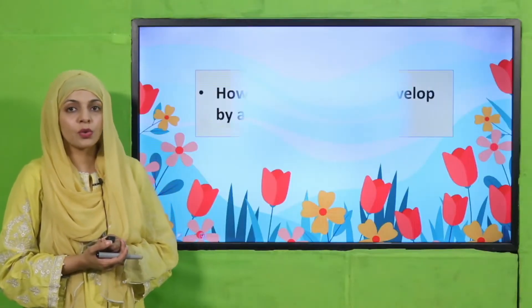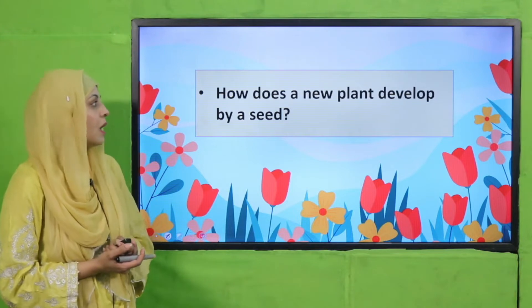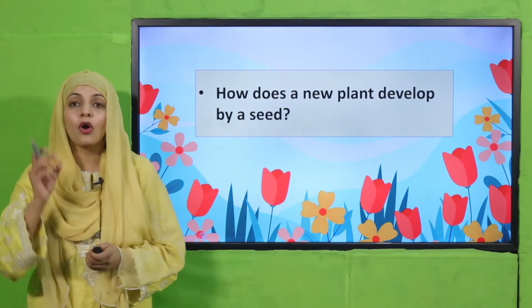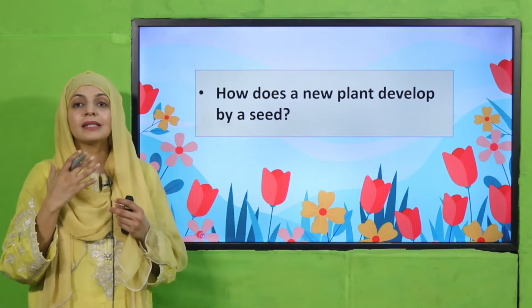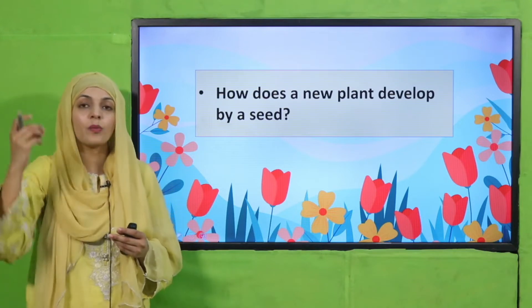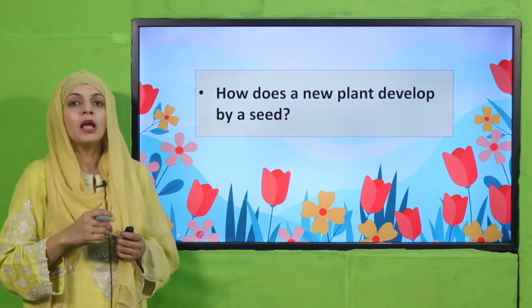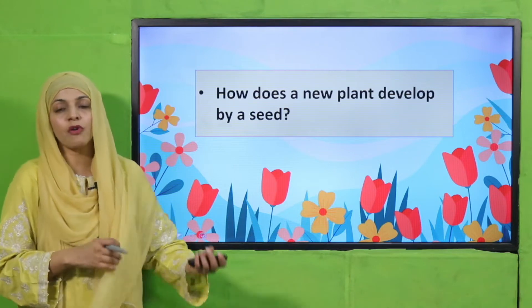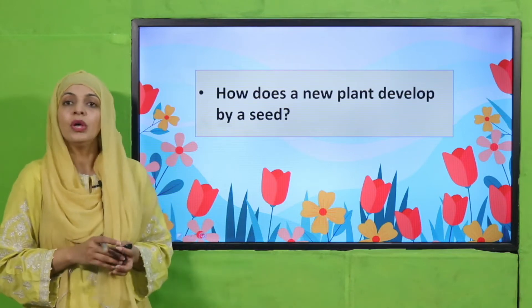With this good message, let's move forward towards pre-reading questions. How does a new plant develop from a seed? Because there is a small embryo inside the seed, and when you put it inside the soil and it gets the conditions necessary for a plant to grow, then it germinates into a new plant.